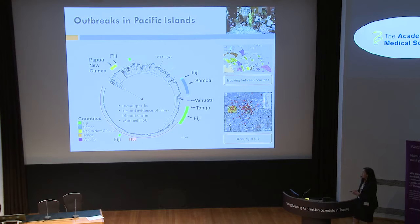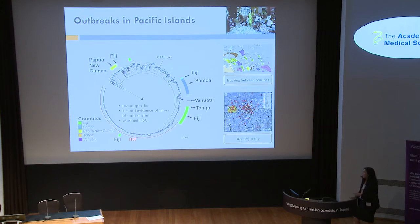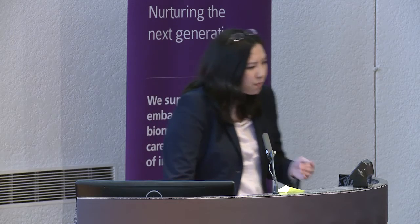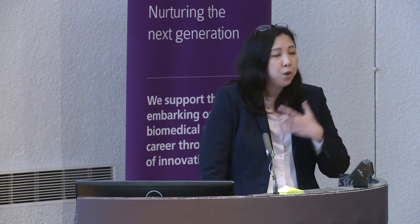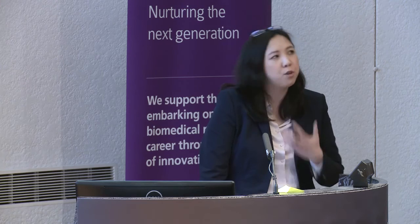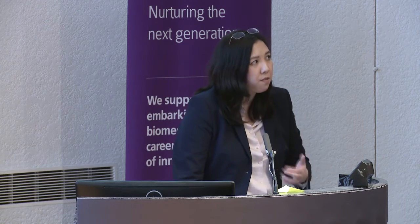They were also very worried about the presence of MDR typhoid and whether any H58 was circulating. We were able to confidently tell them from the isolates provided that there was no current H58 circulating — though 11 isolates from Fiji were H58, they dated from 1992 and 1994. This was critical because in Samoa most patients receive oral antibiotics in the community, and they lacked the infrastructure to cope with an MDR outbreak requiring intravenous antibiotics, which would involve transferring patients from peripheral islands to the main hospital.